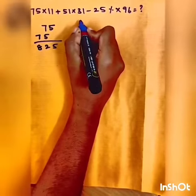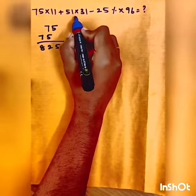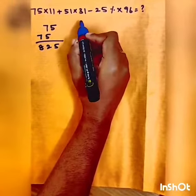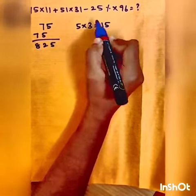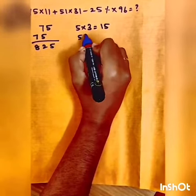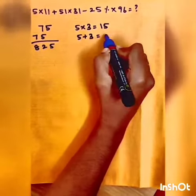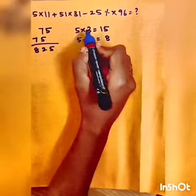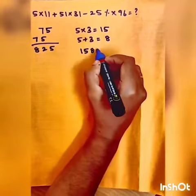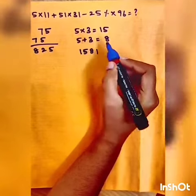Then 51 into 31. So for any 2 digits ending with 1, you have to calculate like this. So take the 5 and 3 in multiplication. So you get 15. Then you have to add the same number in this manner. 5 plus 3 is 8. So by combining this 1, 5, 8 and the common digit 1, you have to write this. This is the answer for 51 into 31.